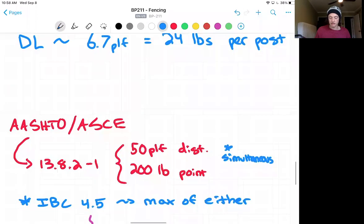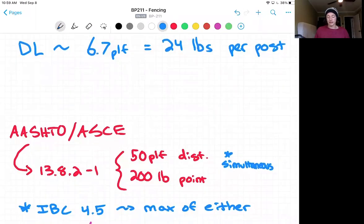Now, we're going to dig into this assumption because the recent international building code in section 4.5 now says you can take the maximum of either. Although AASHTO has not adopted this yet, we're going to use our engineering judgment here. And these guardrails are not as heavily used as some of the guardrails that you can imagine are designed for high traffic areas in places that the AASHTO code body governs. So because of that, we're going to make the assumption with our engineering judgment that these guardrails are not heavily used. We're actually going to take the maximum of either of these loads.